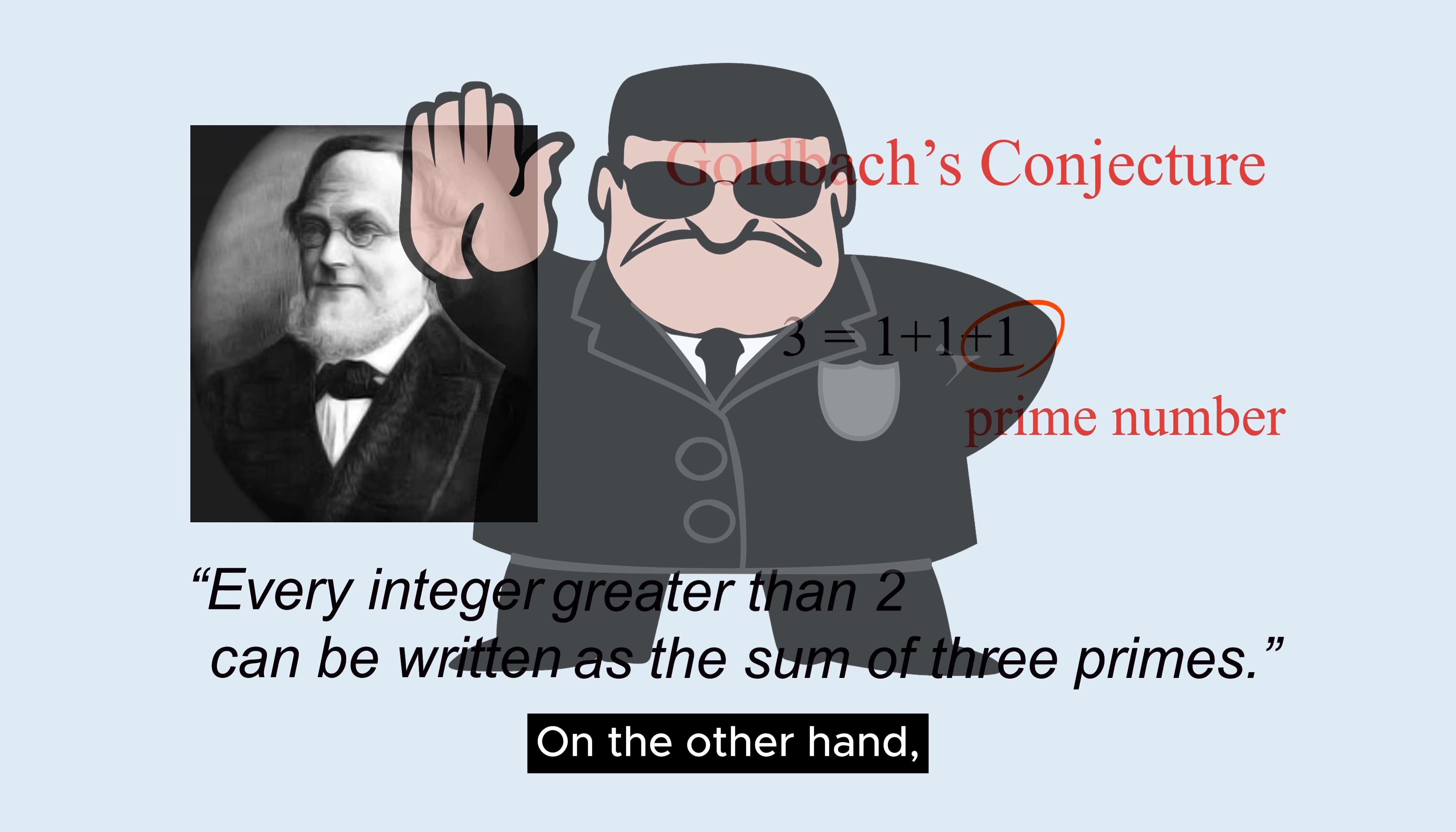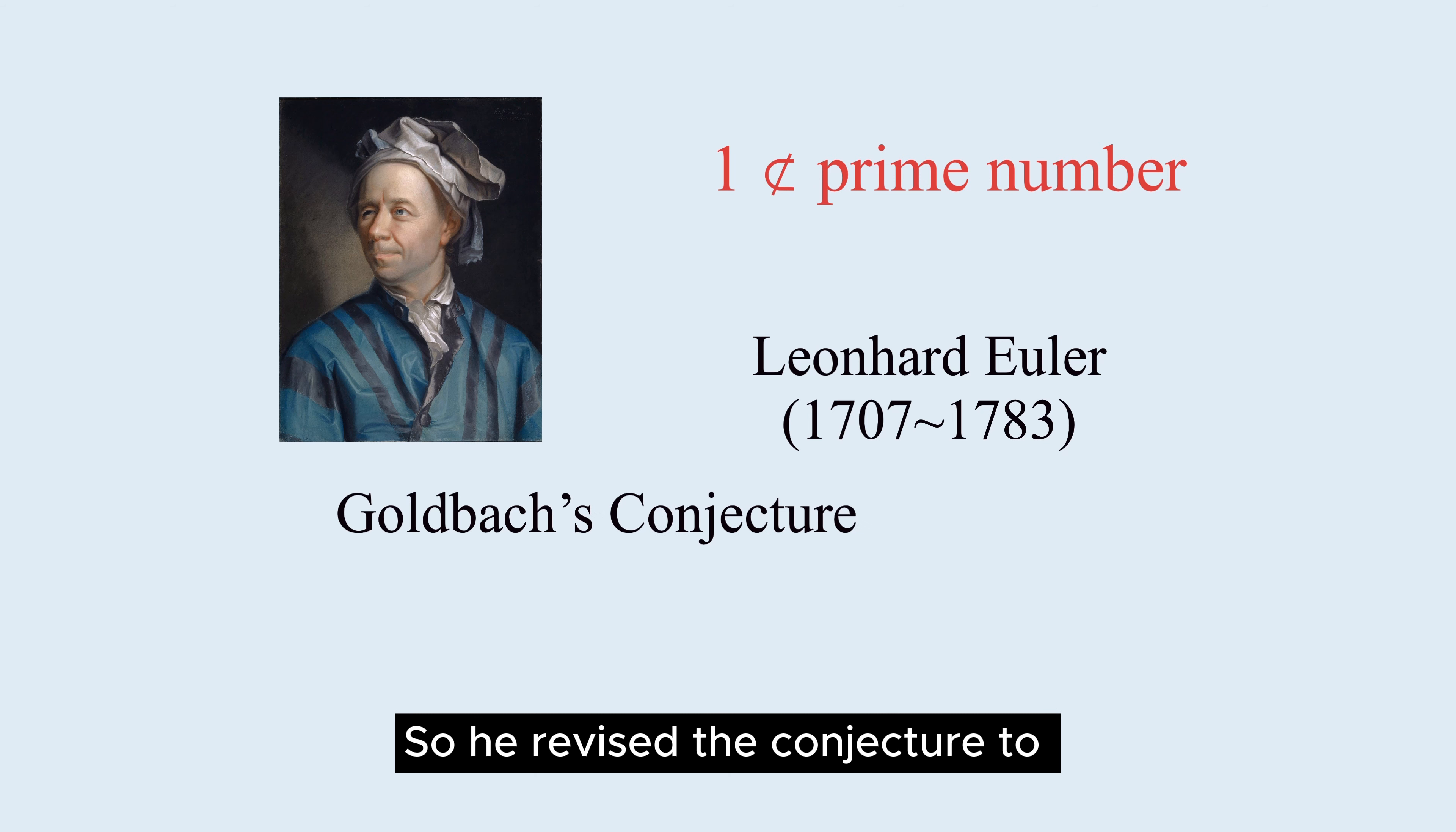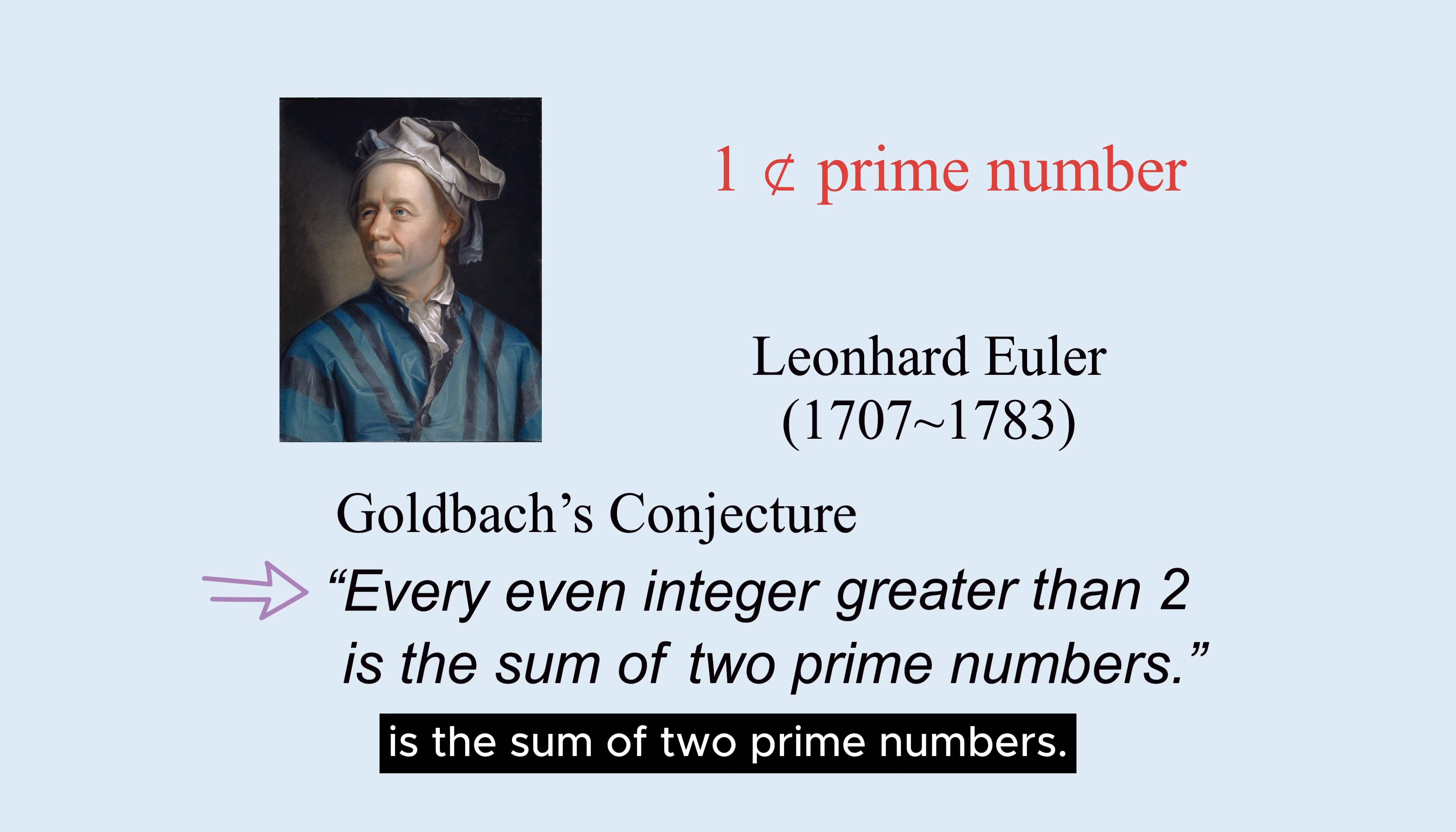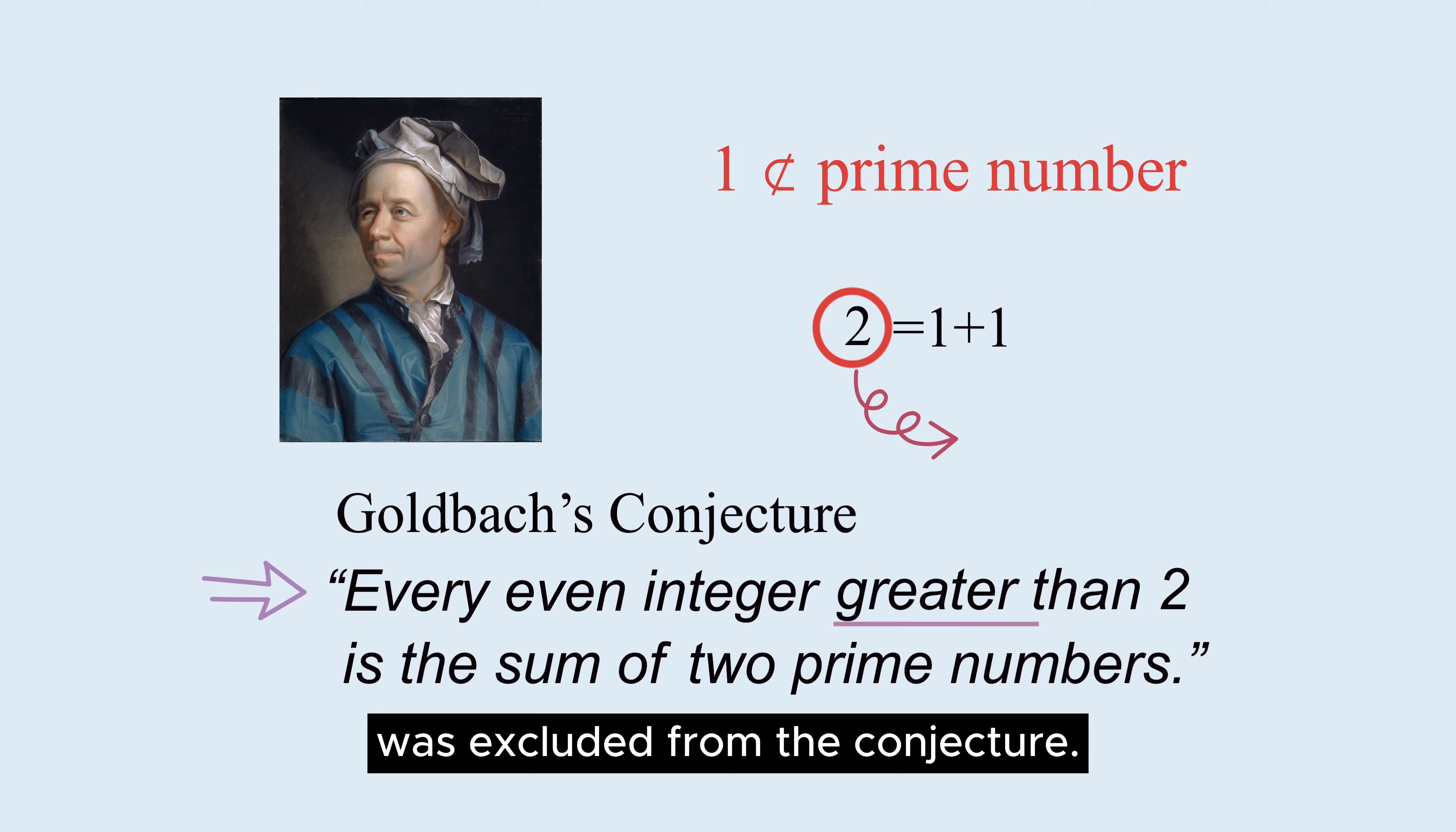On the other hand, mathematician Euler did not consider 1 to be a prime number. So he revised the conjecture to every even integer greater than 2 is the sum of two prime numbers. 2, which is 1 plus 1, was excluded from the conjecture.